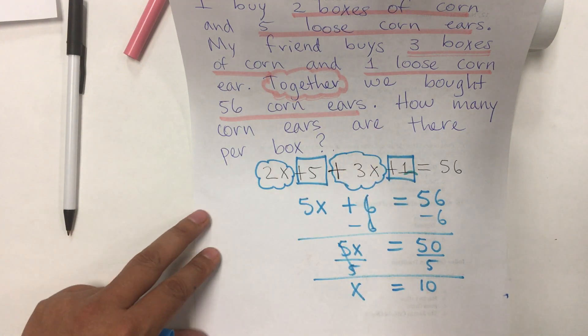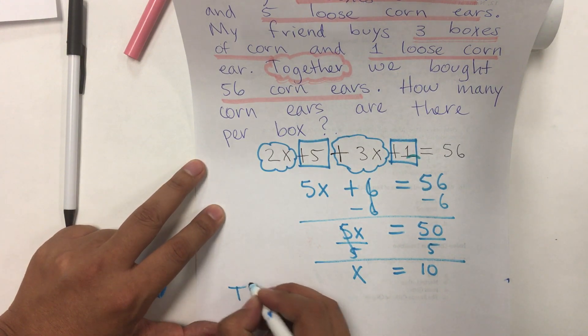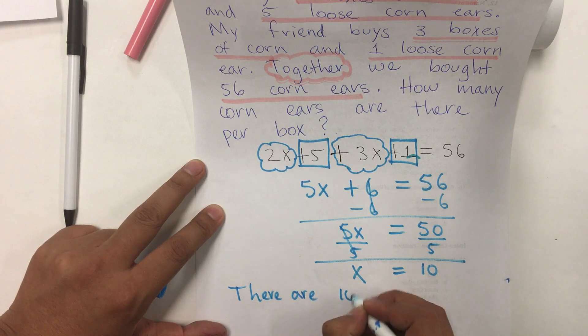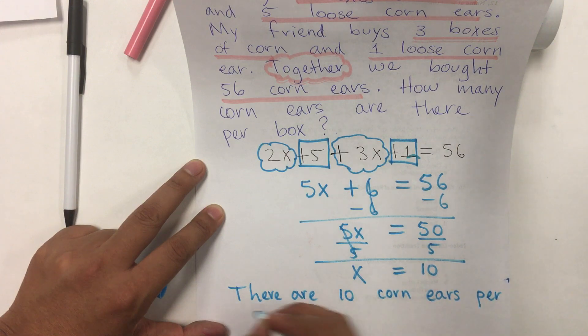So, it says how many corn ears are there per box? We're going to answer in a complete sentence. There are 10 corn ears per box.